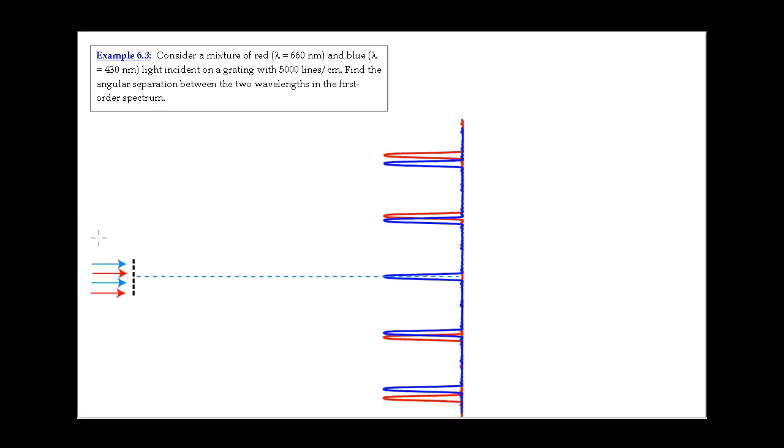So take a look at the sketch. Here we see the light coming in and we've got, of course, two different colored arrows to represent lambda 1, which I'll use to be the smaller of the two, 430 nanometers, and then lambda 2, the red, which is 660 nanometers.